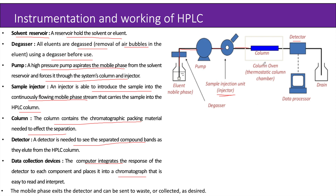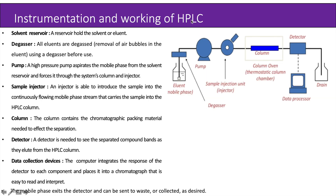Now let us see the working of HPLC. A reservoir holds the solvent, i.e., the mobile phase. It is degassed before entering the column. A high pressure pump — that is, the solvent delivery system or solvent manager — is used to generate a specified flow rate of mobile phase. An injector introduces or injects the sample into the continuously flowing mobile phase stream, which carries the sample into the HPLC column. The column contains the chromatographic packing material, i.e., the stationary phase, needed to effect the separation. A detector sees the separated compound bands as they elute from the HPLC column, and the mobile phase exits the detector and can be sent to waste or collected as desired.